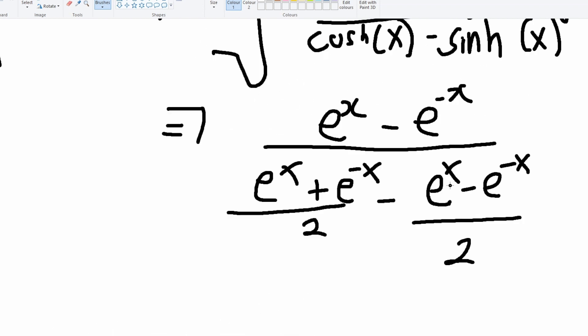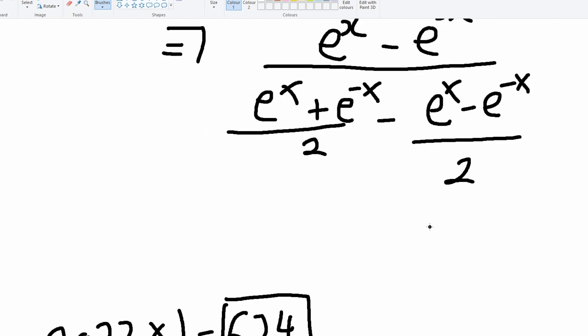Now as you can see we have two e to the negative x here, but we have to minus them so we'll just add them together and then the 2s cancel out.